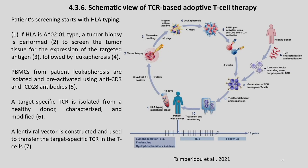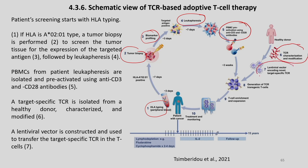This is a schematic view of TCR-based adoptive T cell therapy with various stages 1 through 10. In the first stage: HLA typing, then tumor biopsy, biomarker profiling, leukapheresis, then PBMC pre-activation using anti-CD3 and CD28 antibodies. Then there is a healthy donor TCR characterization and modification, lentiviral vector encoding a novel target-specific TCR, generation of TCR transgenic T cells, T cell enrichment and expansion, and finally treatment and monitoring.